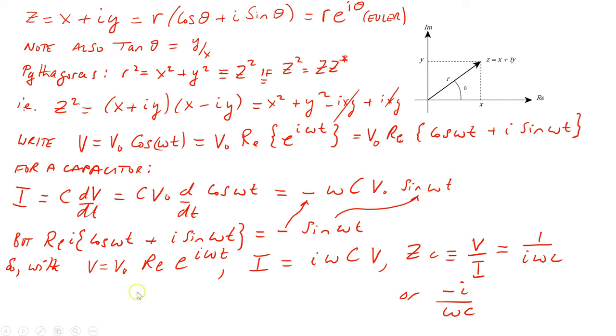So if we start with our voltage being v equals v₀ times the real part of e^(iωt), the current through a capacitor then is given by iωC times this v here.